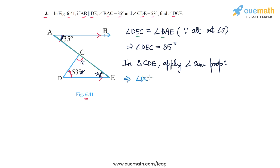So angle DCE, the angle we have to find, plus angle CDE which is 53 degrees, plus angle DEC which we calculated as 35 degrees, this is equal to 180 degrees.